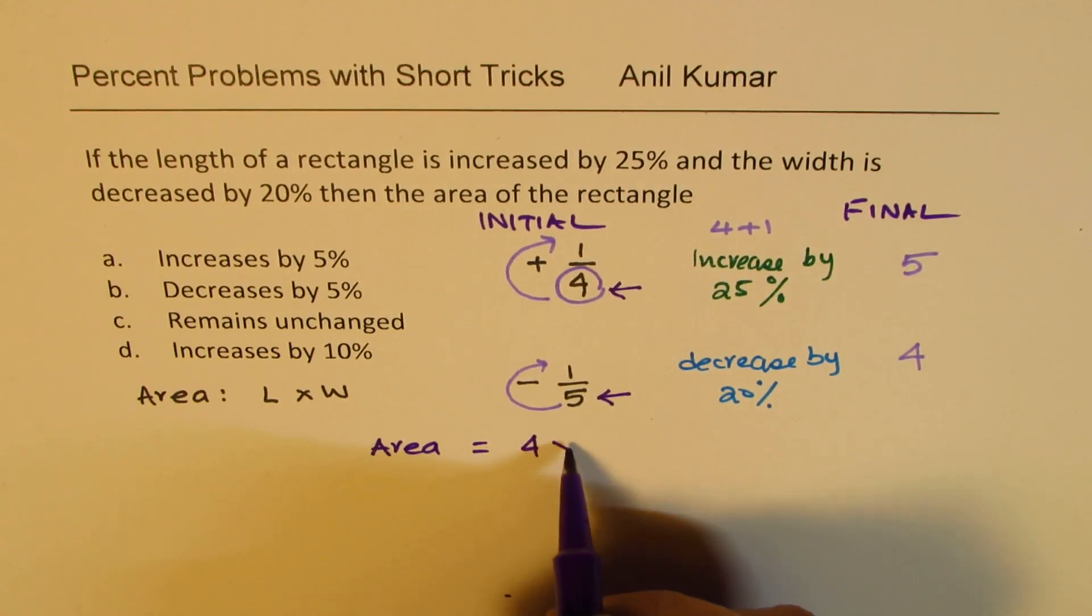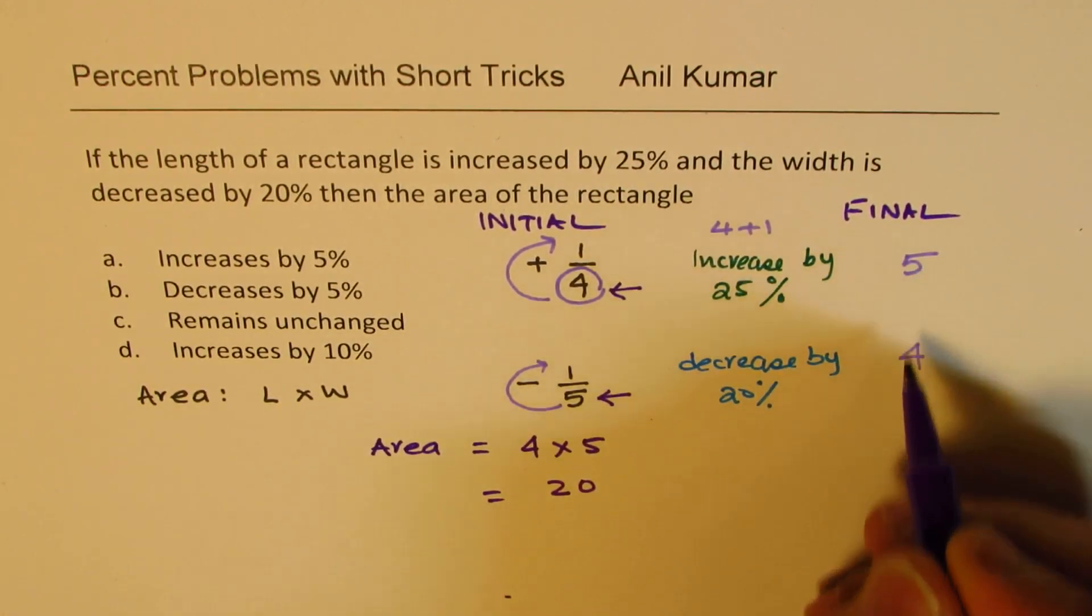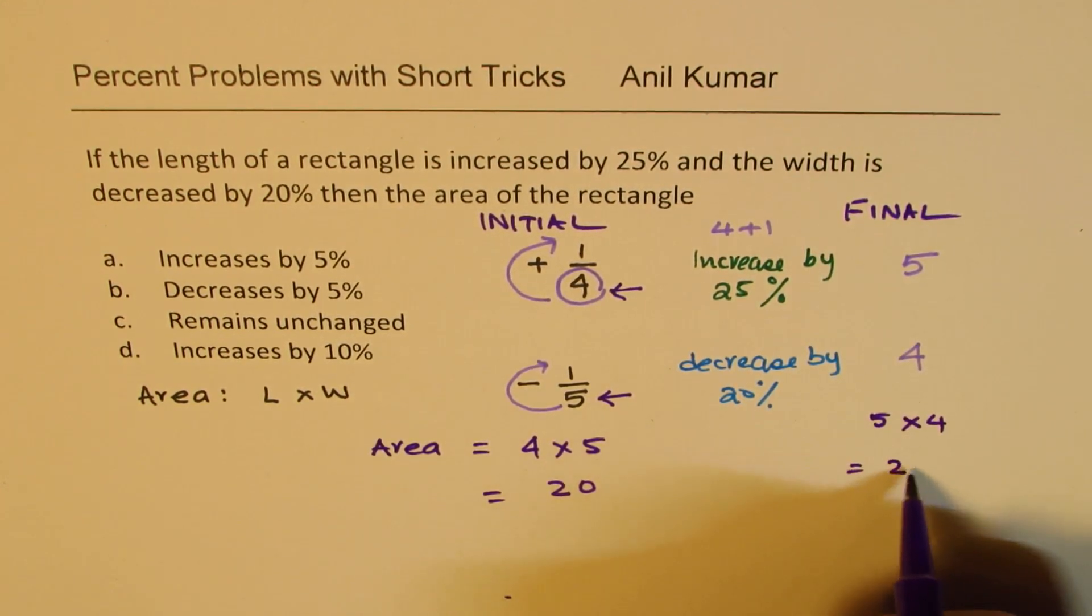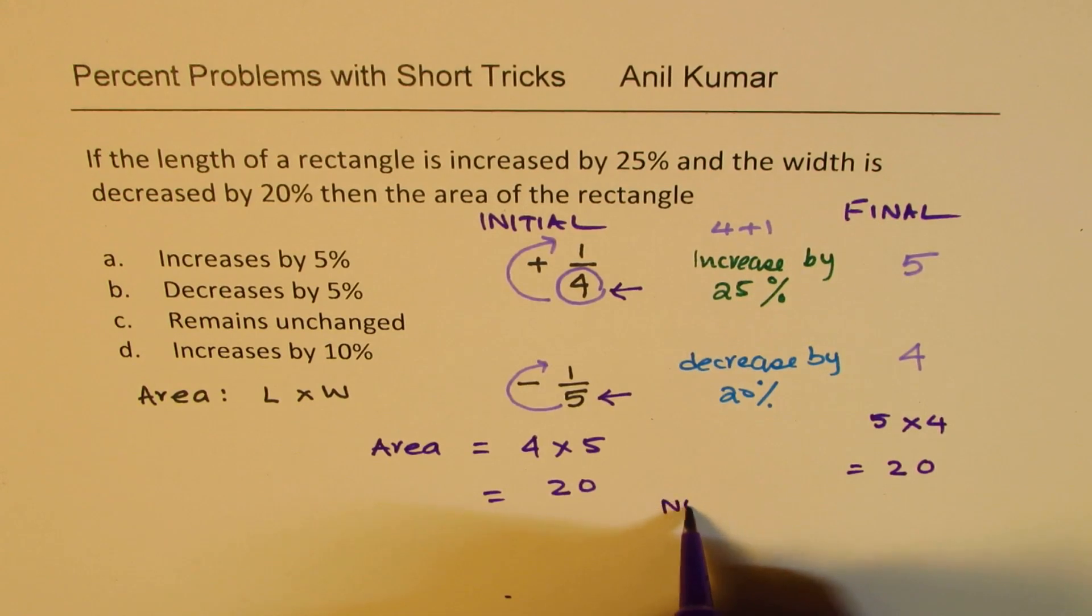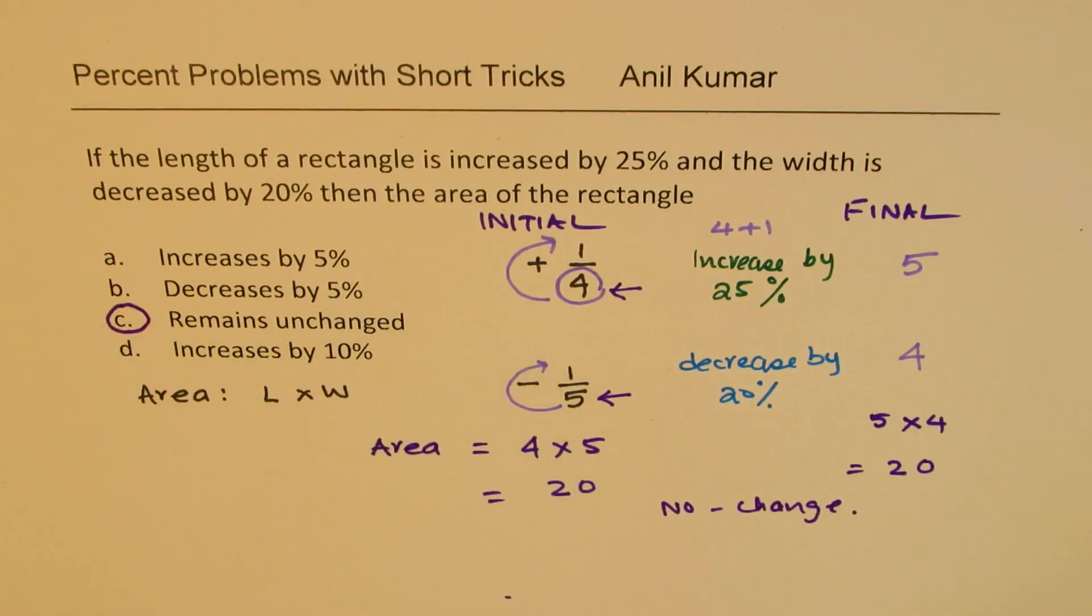Now let's calculate the area. Our initial will be this side, and final will be that. These bottom values are the initial values, 4 and 5. So area is 5 times 4, and final is 4 times 5, which means no change. Option C is the right option.